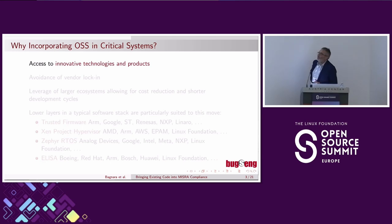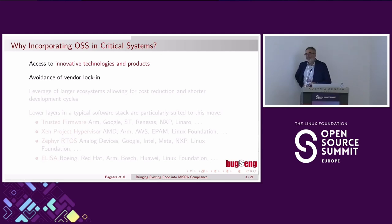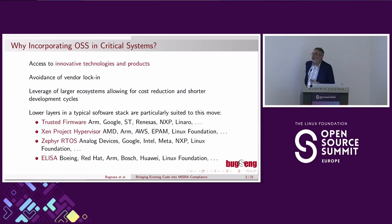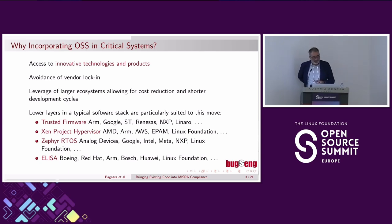Why are people incorporating open source software in critical systems? To have access to innovative technologies and products, to avoid vendor lock-in, to leverage existing communities and ecosystems, and to allow for cost reduction and shorter development cycles. The lower layers in a software stack are particularly suited to this move. Projects I've been involved with include Trusted Firmware, which is enforcing MISRA compliance, and the Xen project hypervisor, which gave rise to this presentation.